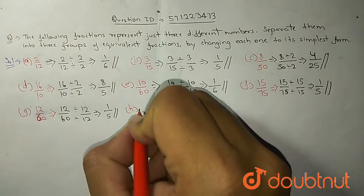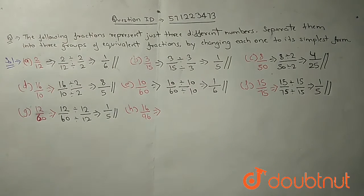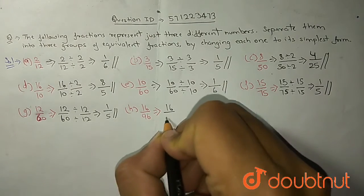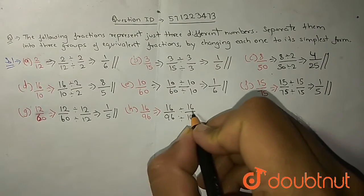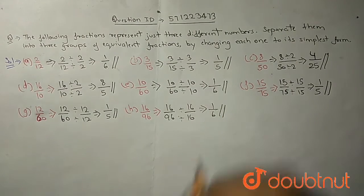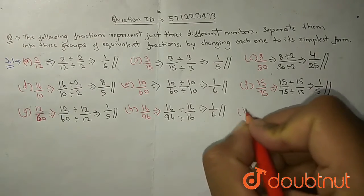Now H part. H is 16 upon 96. Does 96 come in the table of 16? Yes, at 6 times. When we multiply 16 by 6 we get 96 and 16 also comes in 16 table. So we divide 16 by 16 and we will get 1 upon 6.